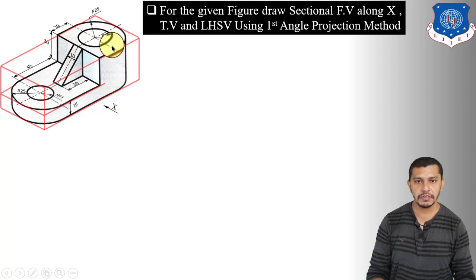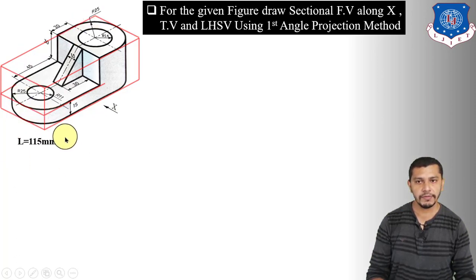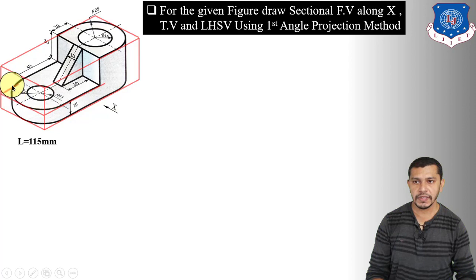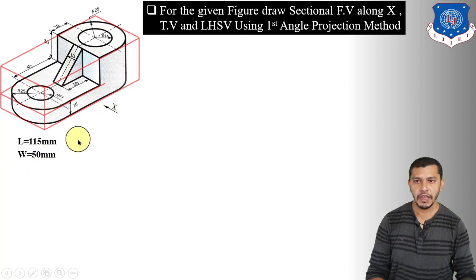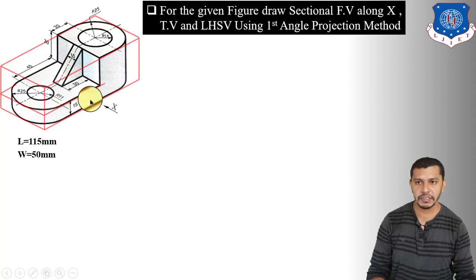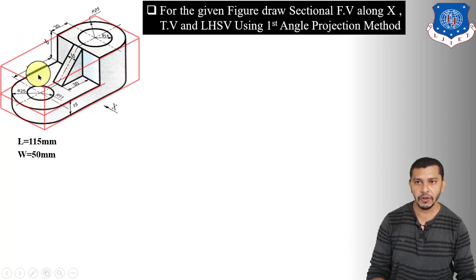So the length of the object will be 25 plus 45 plus 25, which is equal to 115 mm. The distance between this edge and this edge gives us the width, which equals the diameter of this circle. Since radius is 25, the diameter will be 50 mm, so the width is 50 mm. The height of the object is the distance between this edge and this edge: 15 up to this edge plus 30, so the height is equal to 45 mm.